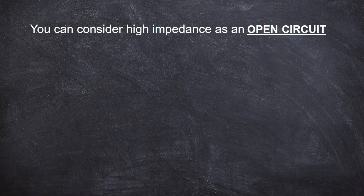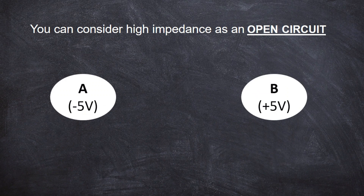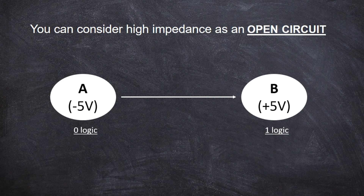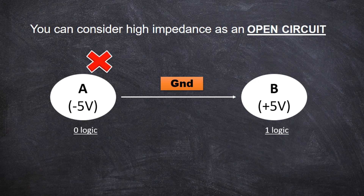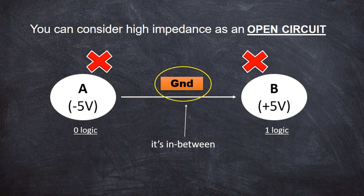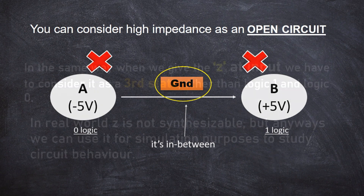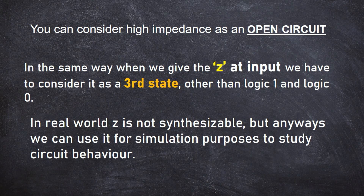Let's consider a high impedance open circuit. Consider a system with A and B. A is minus 5V, which is zero logic; B is plus 5V, which is one logic. Z is a third state. In the real world, Z is non-synthesizable. That's why if you use anything for simulation purposes — to study the behavior of a circuit — you use high impedance.